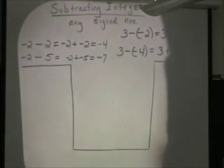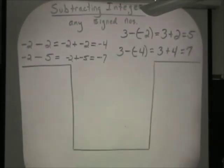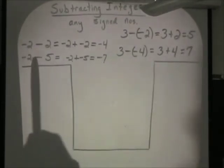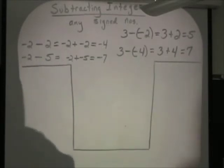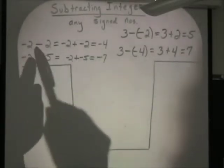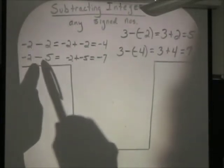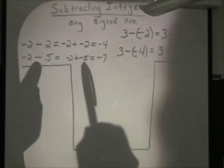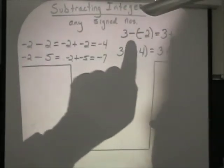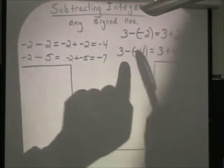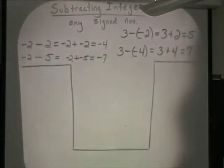Let's look for a pattern. We've written out four different subtraction problems. In every case, to subtract a number, the net result is the opposite: subtracting positive 2 was like adding negative 2, subtracting positive 5 was like adding negative 5, subtracting negative 2 was like adding positive 2, and subtracting negative 4 was like adding positive 4.